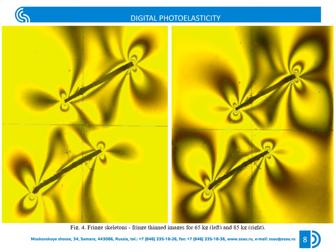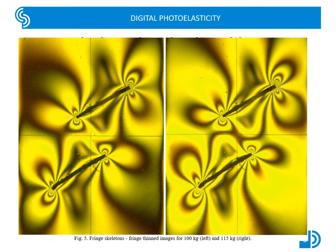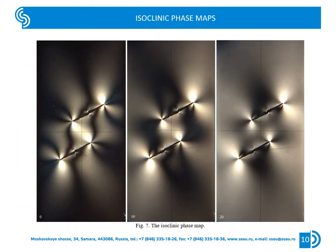These data are then used for determination of the fracture mechanics parameters. Here one can see again the green points belonging to the isochromatic fringe, along with the isochromatic phase maps.